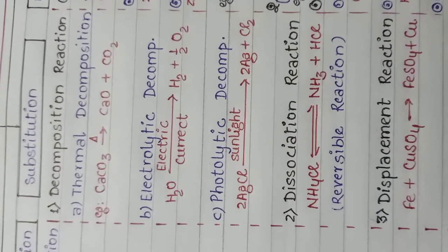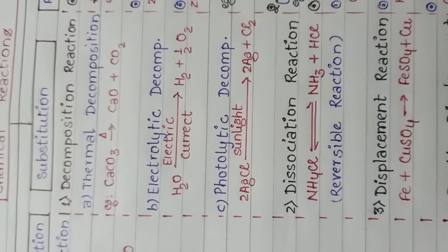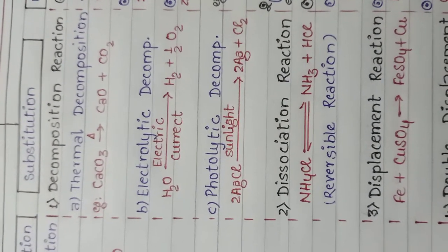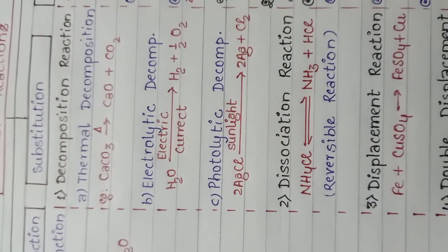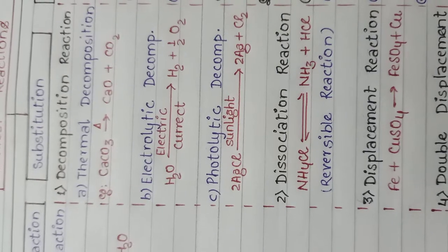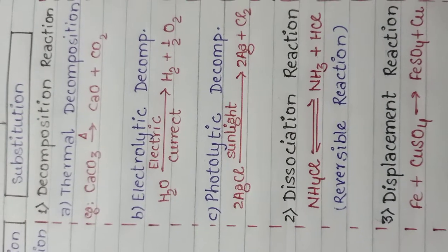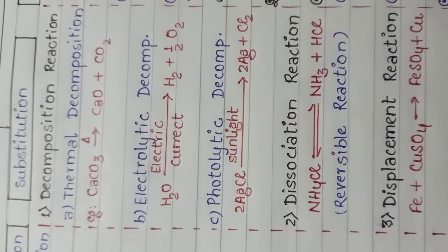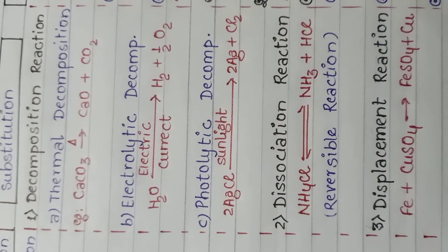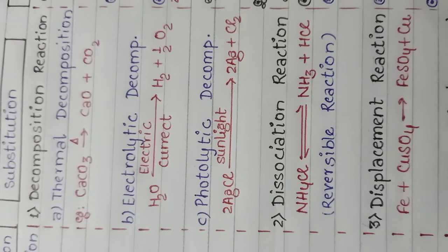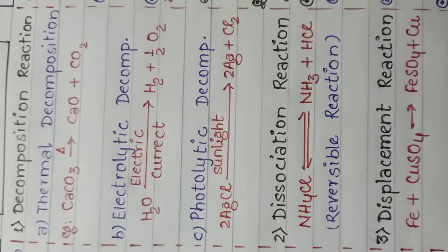When a decomposition reaction is carried out by heat, it is called thermal decomposition reaction. The word thermal is taken from the Latin word thermos, which means heat. For example, when calcium carbonate decomposes to form calcium oxide and carbon dioxide gas in the presence of heat, this is a type of thermal decomposition reaction.